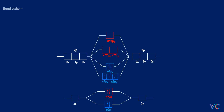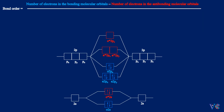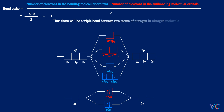Bond order is equal to the number of electrons in the bonding molecular orbitals minus the number of electrons in the antibonding molecular orbitals, divided by 2. Thus, there will be a triple bond between the two atoms of nitrogen in the nitrogen molecule.